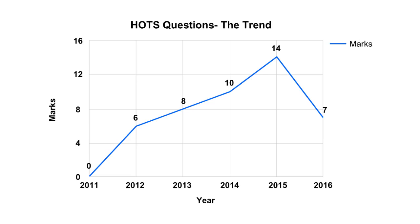Let's try to figure out the proportion of hot questions in the paper. From 2011 to 2015, we have observed an increasing trend in the proportion of hot questions. However, this year hot questions accounted for only 7 marks as compared to 40 marks in 2015.